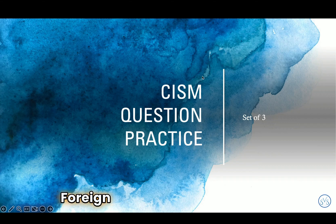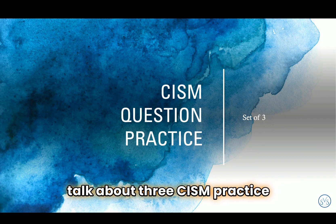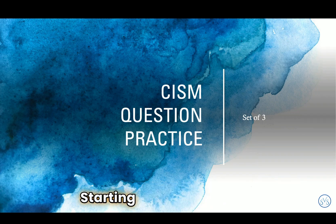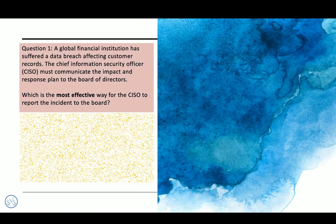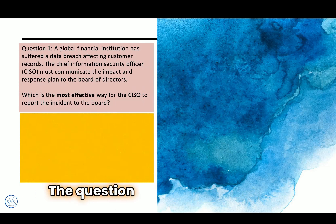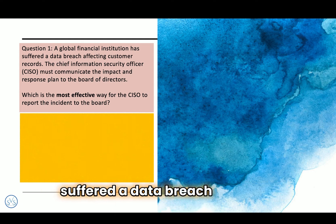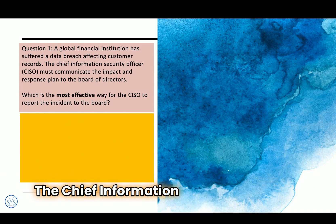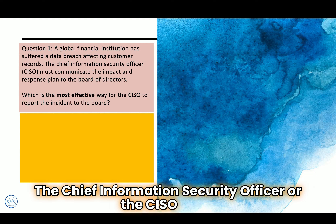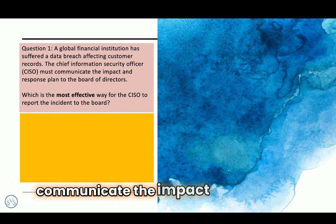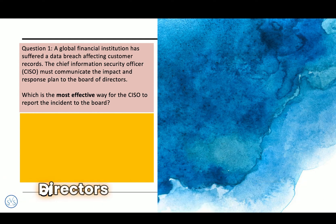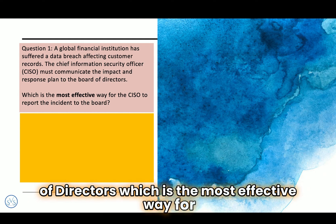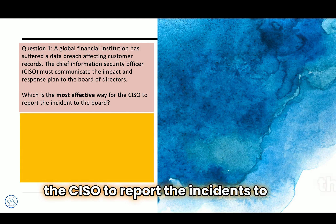Hello everyone. Today we are going to talk about three CISM practice questions, starting with the first one. A global financial institution has suffered a data breach affecting customer records. The Chief Information Security Officer, or CISO, must communicate the impact and response plan to the board of directors. Which is the most effective way for the CISO to report the incident to the board?